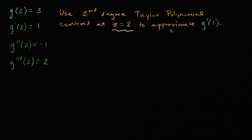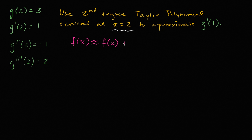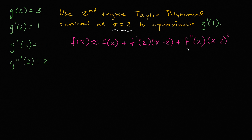Let's remind ourselves what a second degree Taylor polynomial centered at x equals two would look like for a general function f of x. So f of x would approximately be equal to f of two, plus f prime of two times x minus two, plus f double prime of two times x minus two squared,